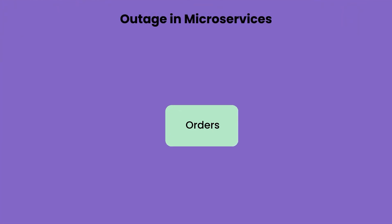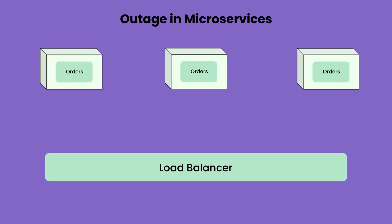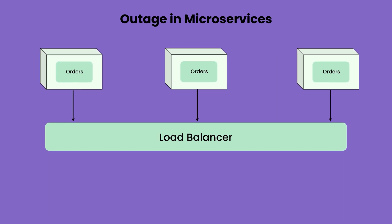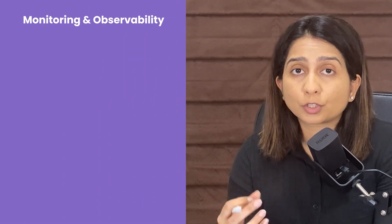Whenever an outage happens in microservices, it is not easy to pinpoint the right service because you have so many services and so many deployments. Some deployments could look like one service on one instance, or one service on different instances behind a load balancer, or different services on different instances behind different load balancers and API gateways. If anything goes wrong, you need to figure out where the problem is.